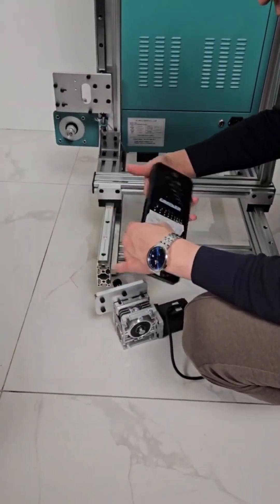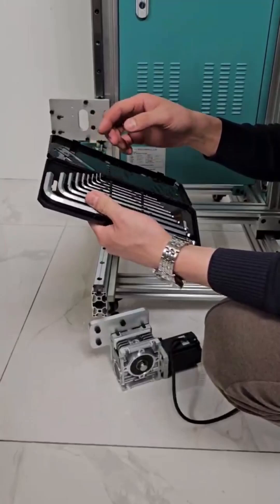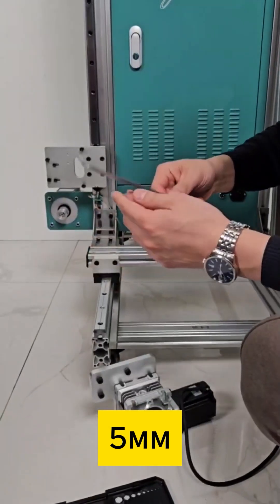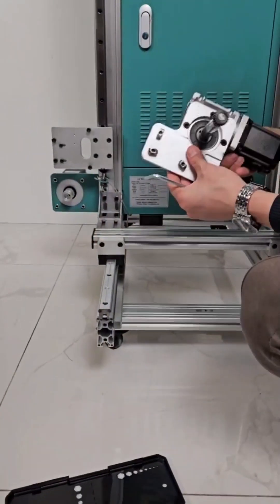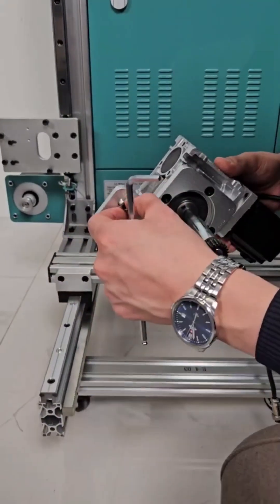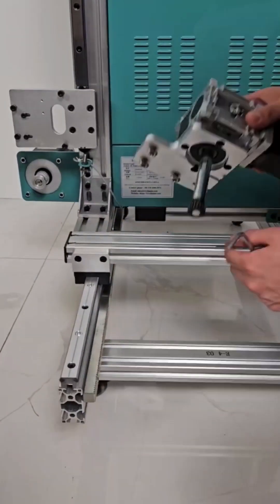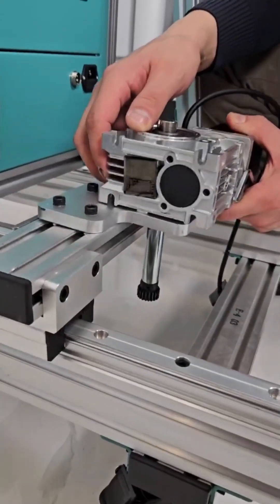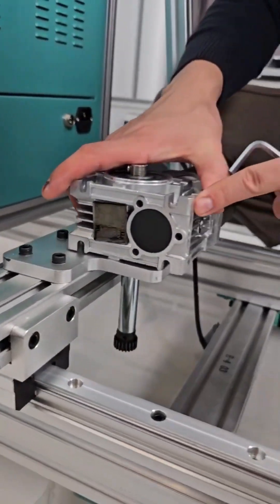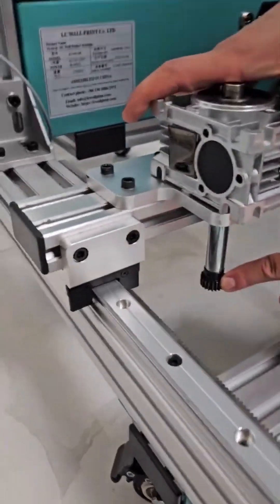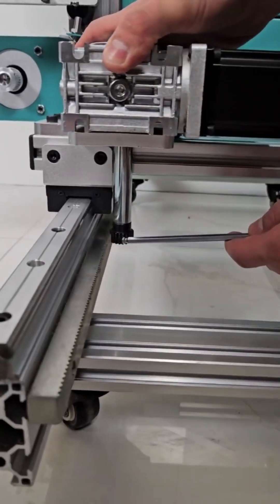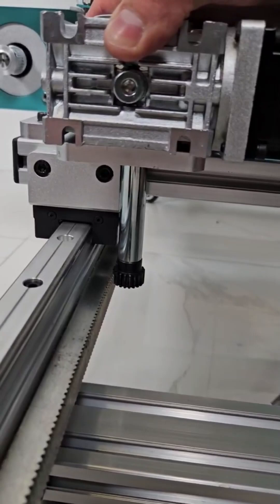You will have such a set of hex keys included with the printer. Here you take a 5mm wrench. The mounting bolts are half-turned. They go into these places. And the motor must also be moved forward so that its shaft is in contact with the guides.